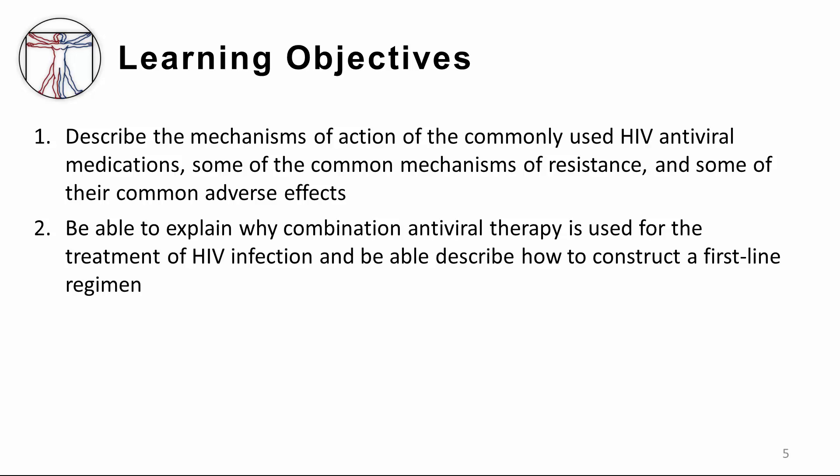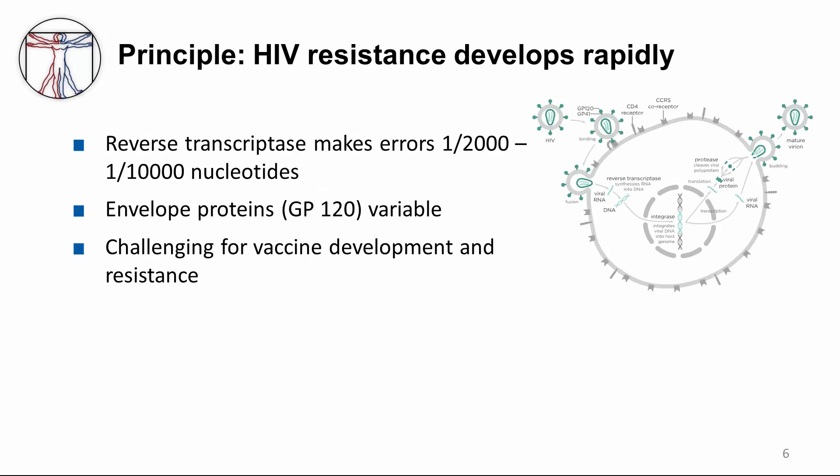These are our learning objectives for this module. One of the main principles we need to consider when thinking about HIV therapeutics is that HIV resistance develops rapidly. This is the reason why we need to construct a regimen of combination therapy. Resistance developed very rapidly when single and even dual drug regimens were previously used. This is because reverse transcriptase makes errors to the order of 1 per 2,000 or 1 per 10,000 nucleotides, and envelope proteins such as GP120 are so variable. These factors also make it challenging for vaccine development.